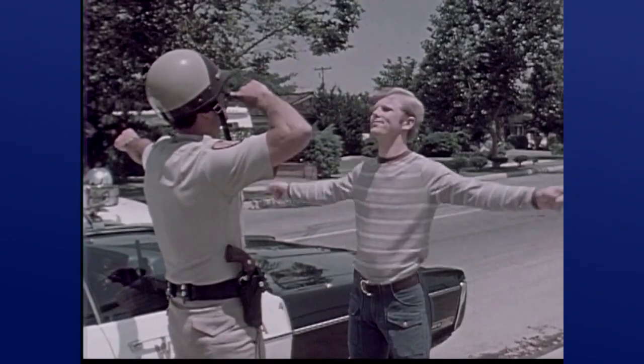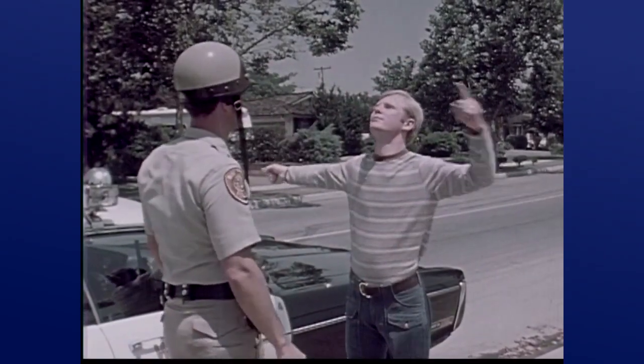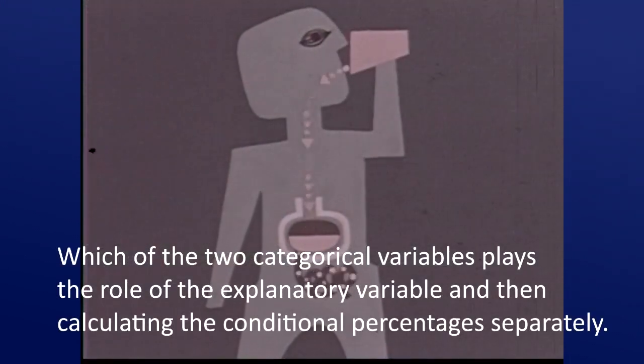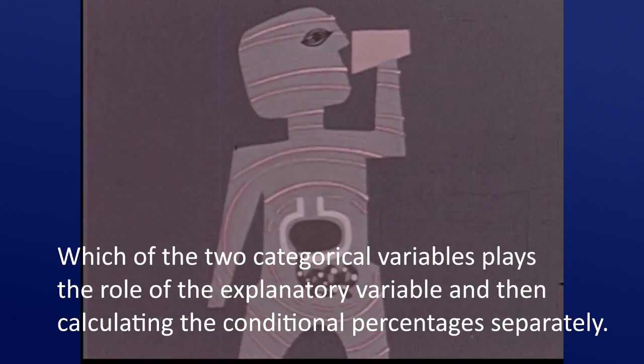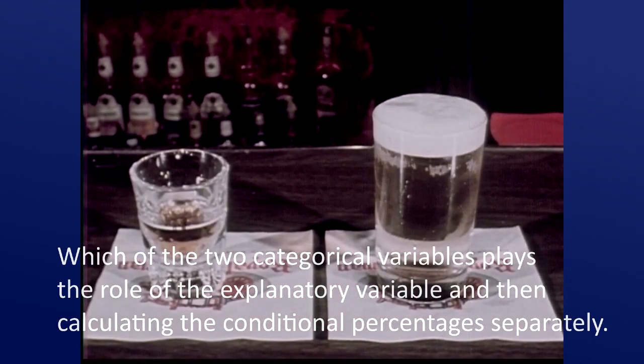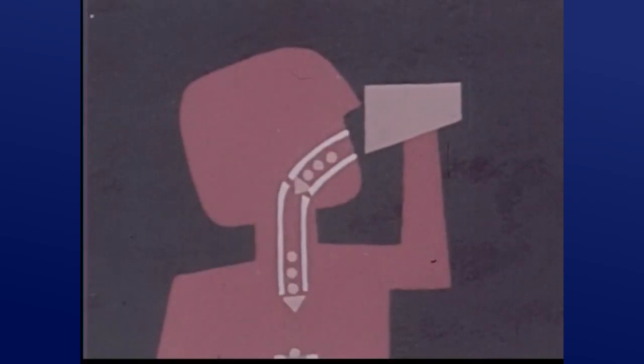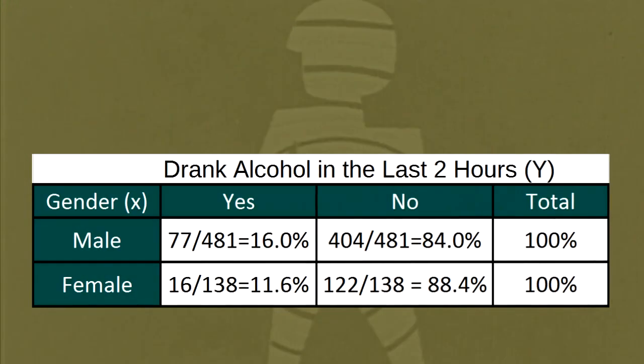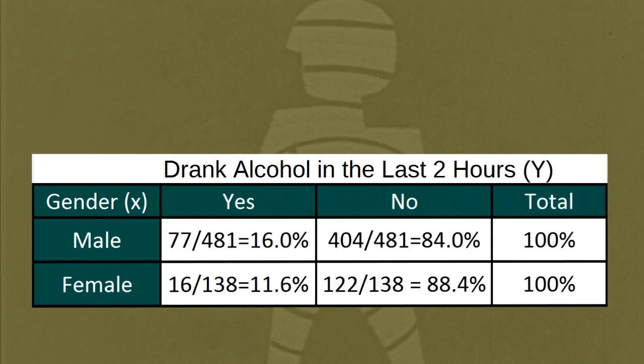The key to reporting appropriate summaries for a two-way table is deciding which of the two categorical variables plays the role of the explanatory variable and then calculating the conditional percentages separately. That is, the percentages of the response variable for each value of the explanatory variable. In this case, since the explanatory variable is gender, we would calculate the percentage of drivers who did and did not drink alcohol for males and for females separately.